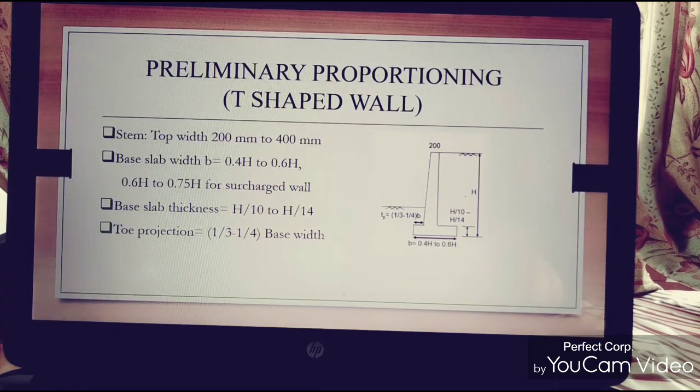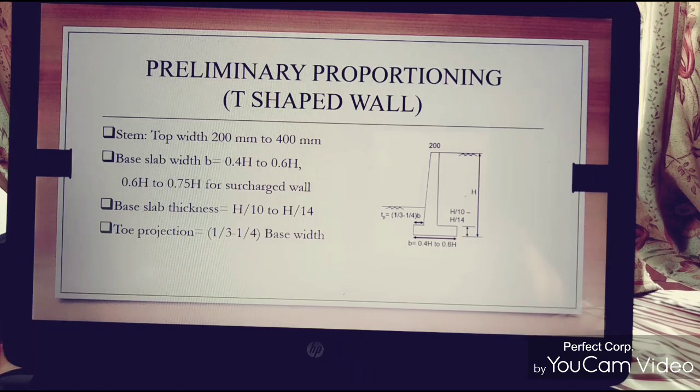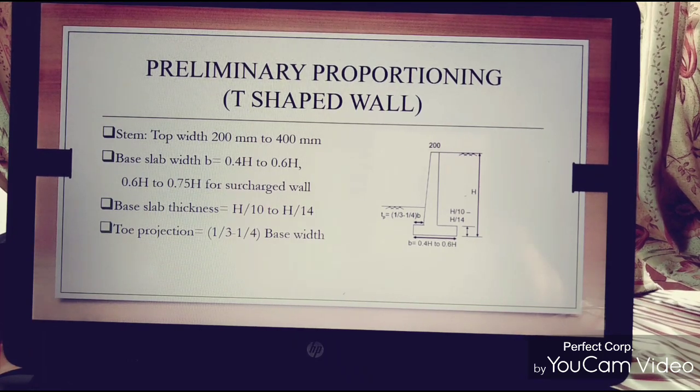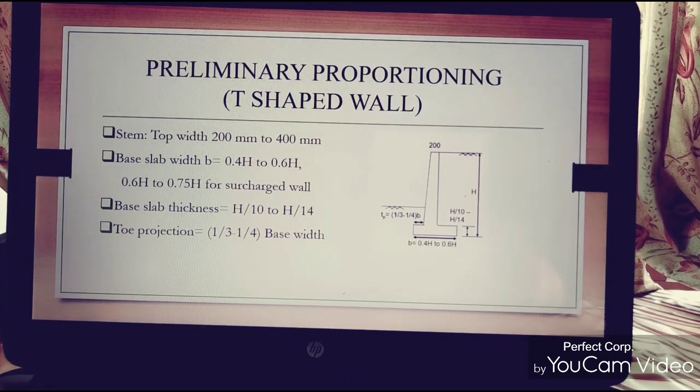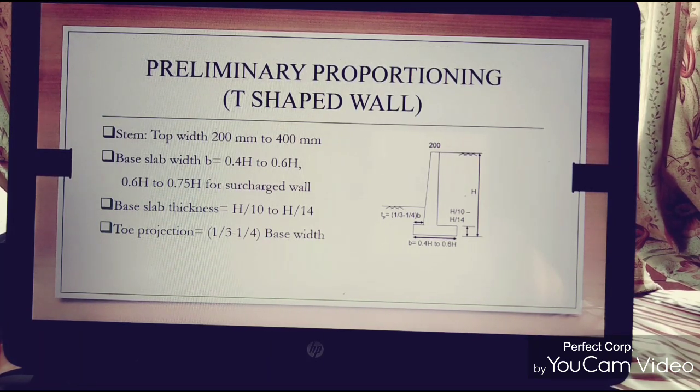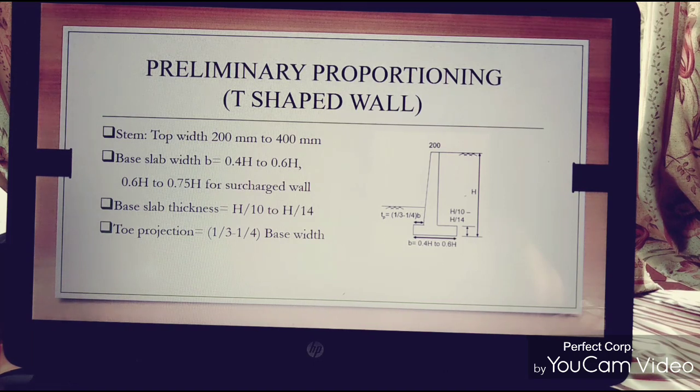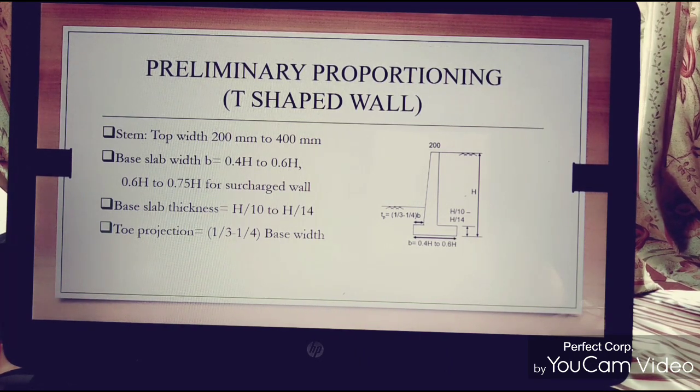The base slab thickness is H by 10 to H by 14, depending on the thickness of the base slab. The toe projection is 1/3 to 1/4 of the base width.